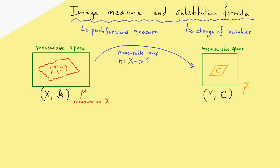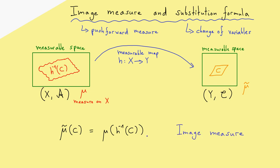So let's put that into a formula. Mu tilde of C is equal to the measure of the pre-image h inverse of C, measured with mu. And this works for all sets C coming from the sigma algebra. This means we now have a measure on the right hand side, and exactly this is what we call an image measure. The two essential ingredients are a measure on the left and a measurable map.